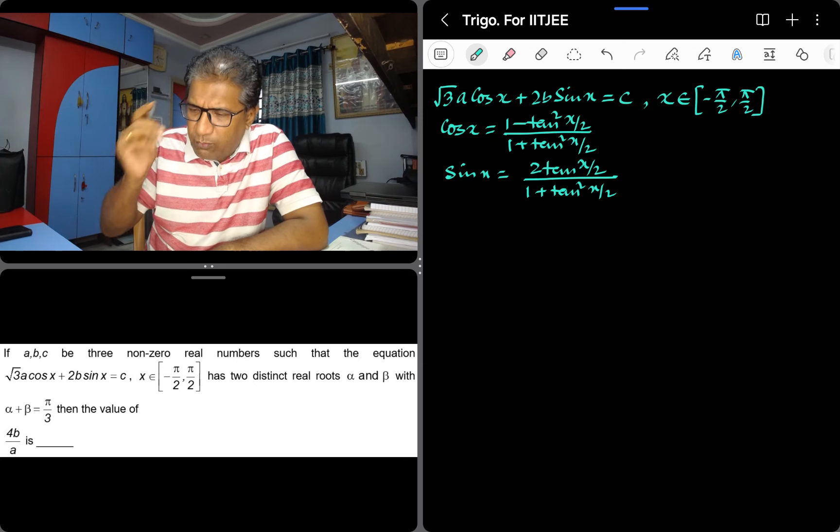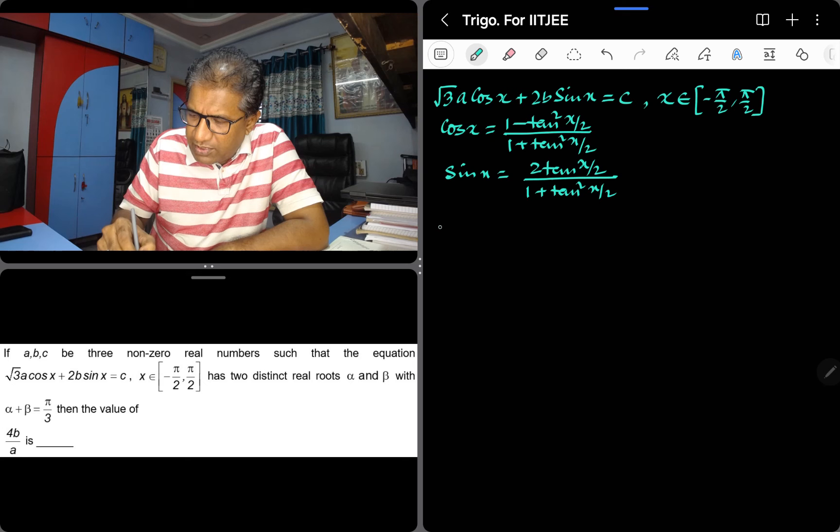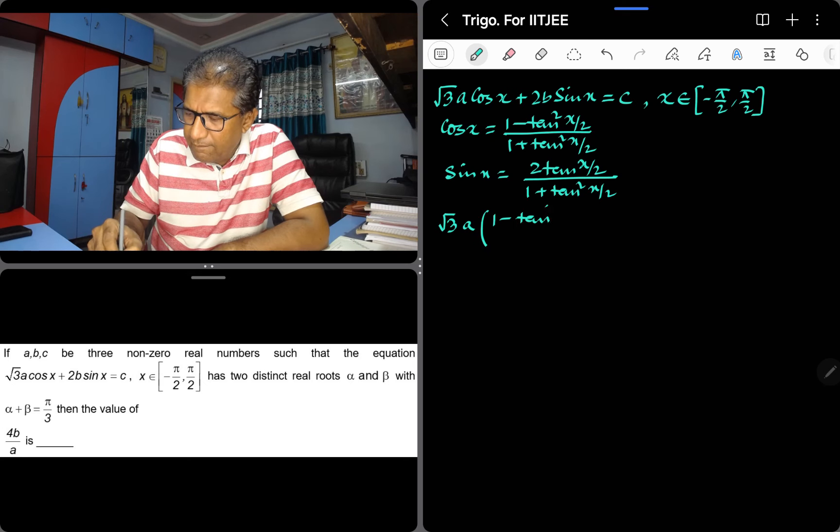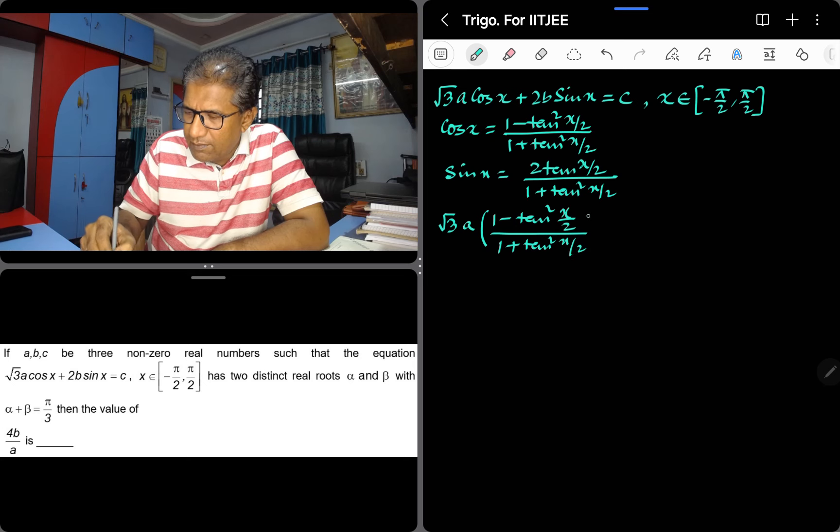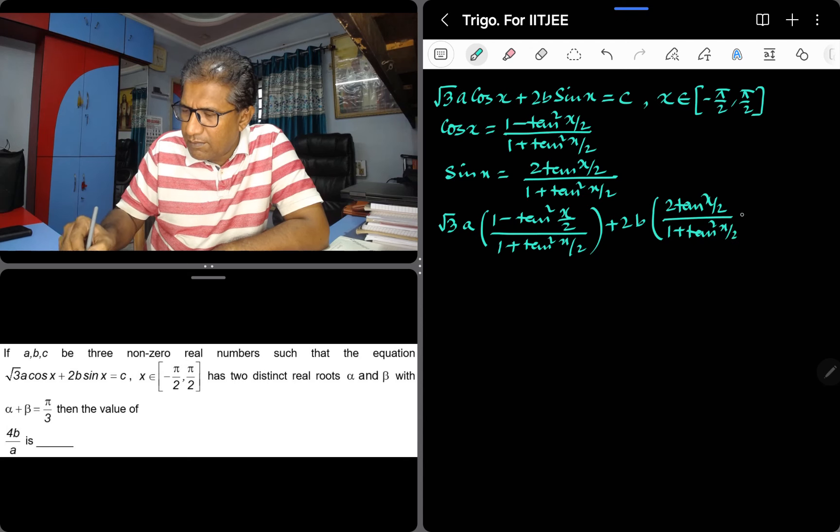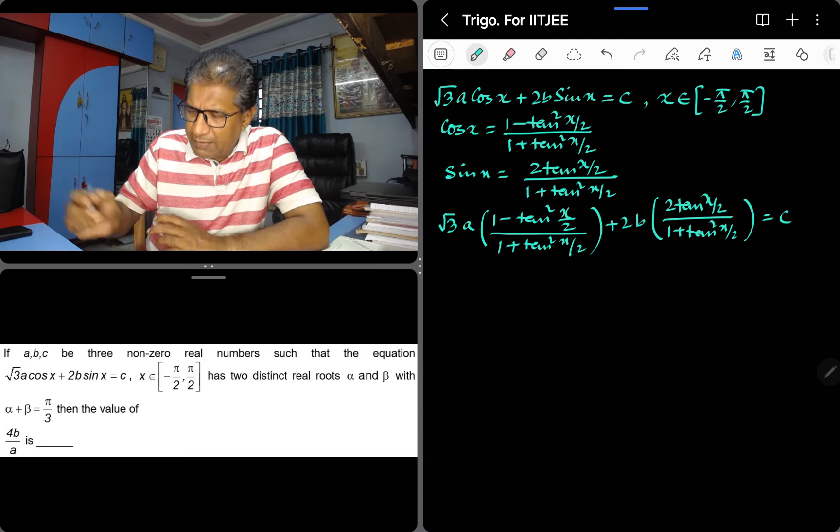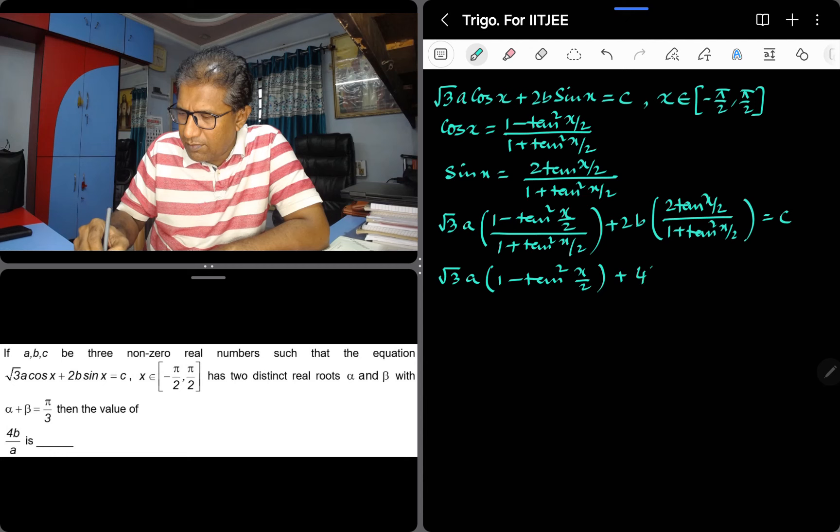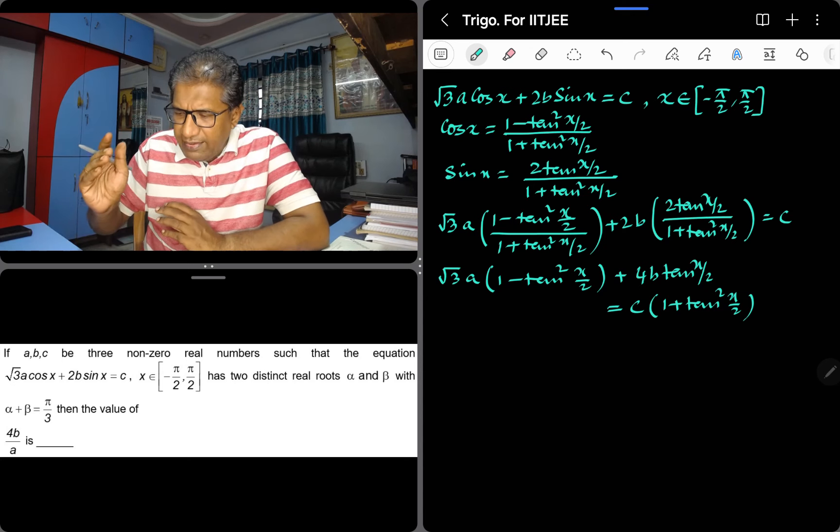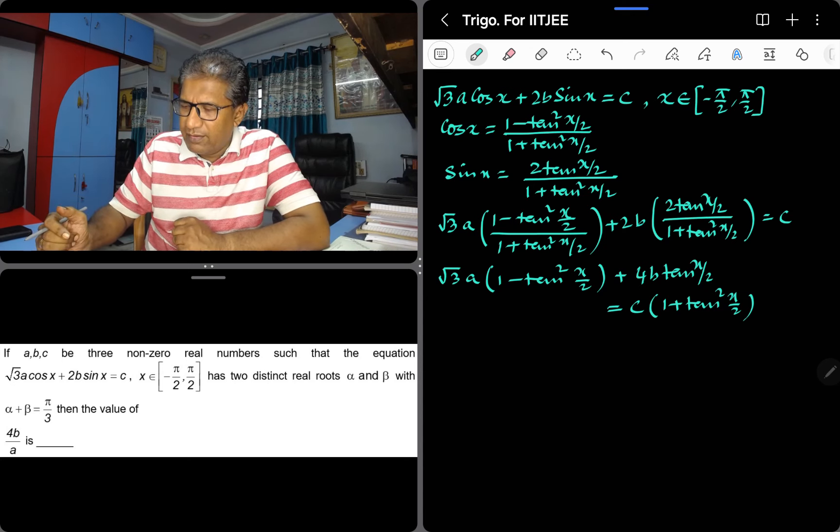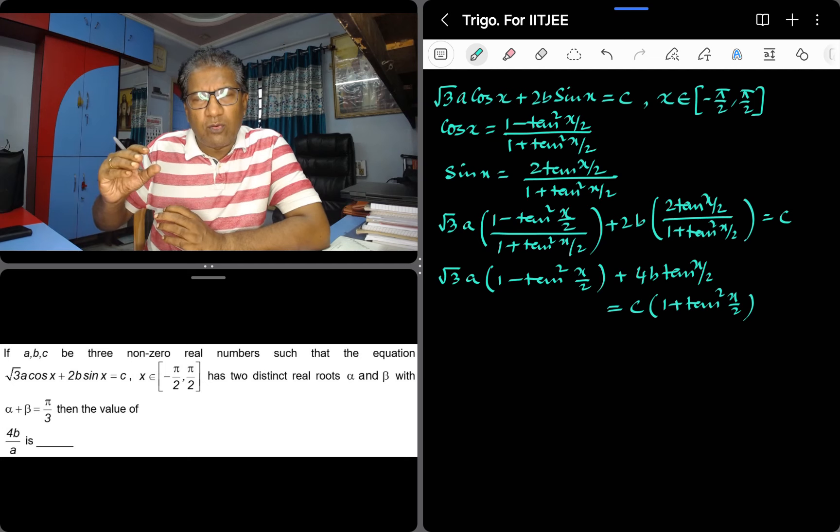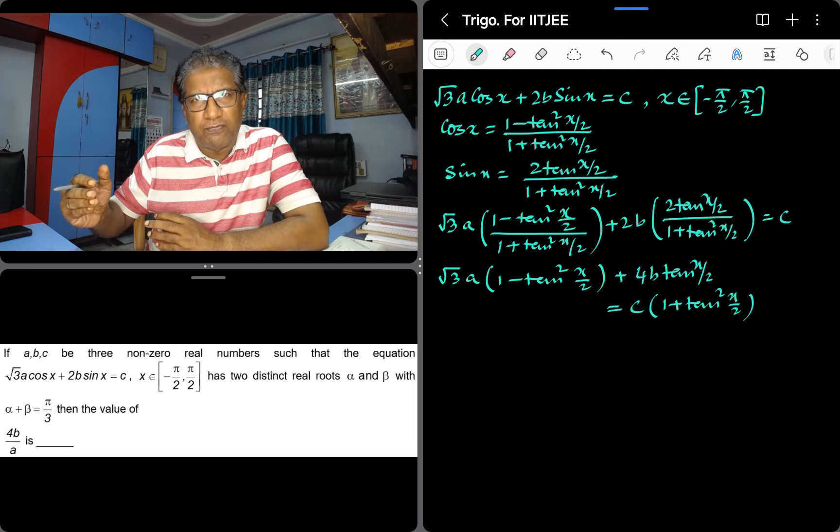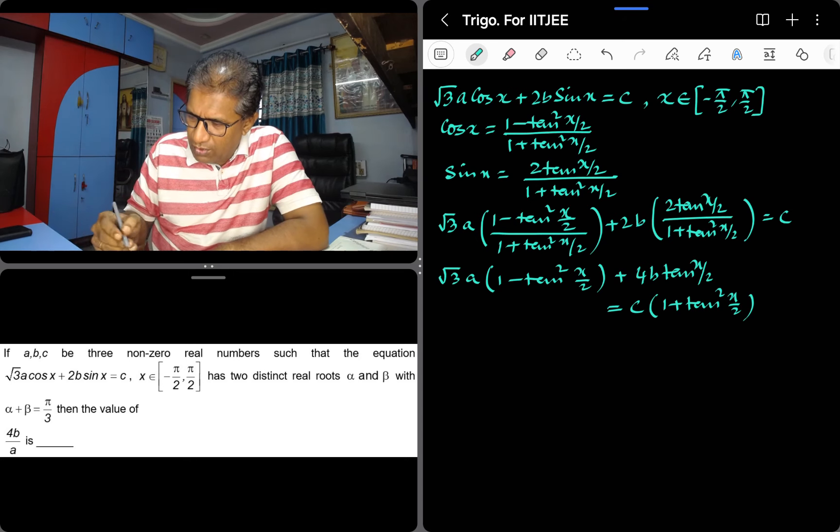So the equation becomes... Let me just cross multiply. We will create a quadratic equation in terms of tan x by 2.